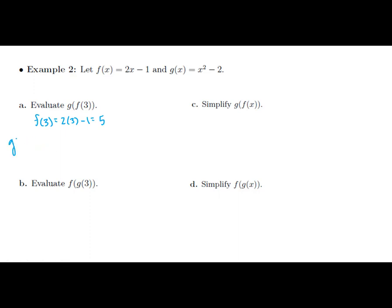So when I say g of f of 3, what I really mean is g of 5, but then, of course, I know what to do with that. The function up here tells me to take that input of 5, square it, and subtract 2. And, of course, that's 25 minus 2, which is 23.